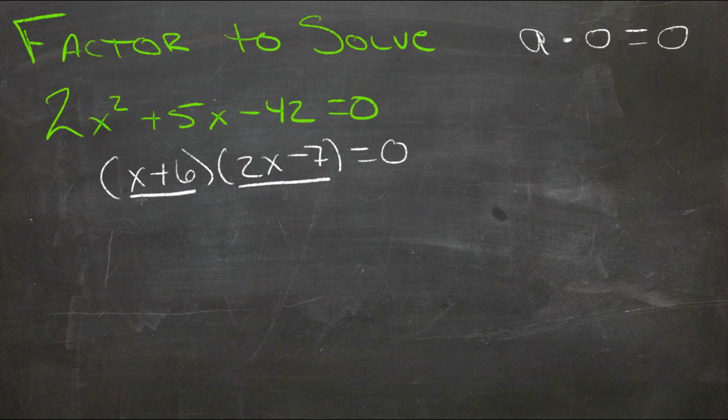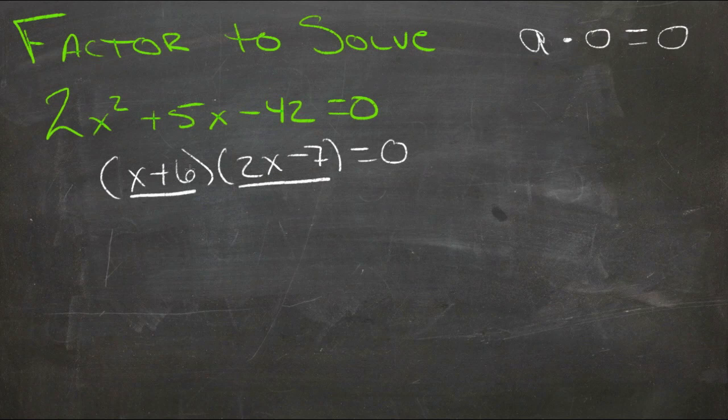So really, there'd be two values for x. Whatever value makes this x zero, because then it doesn't matter what this one is. And then whatever value makes this x equal to zero, because then it doesn't matter what this one is.